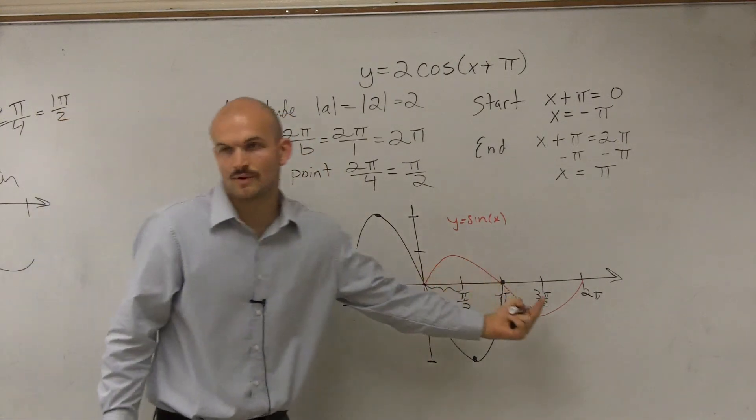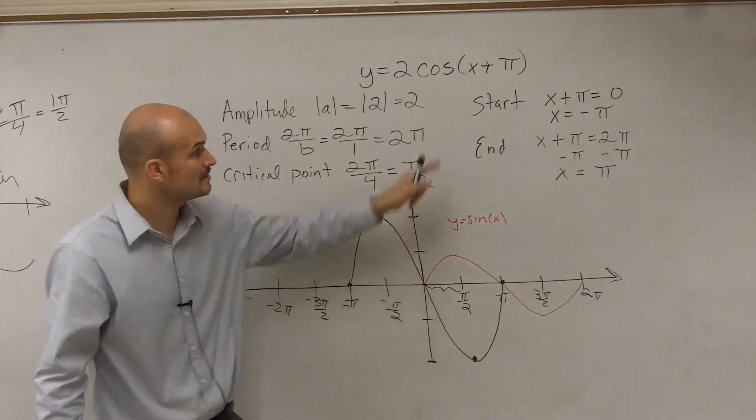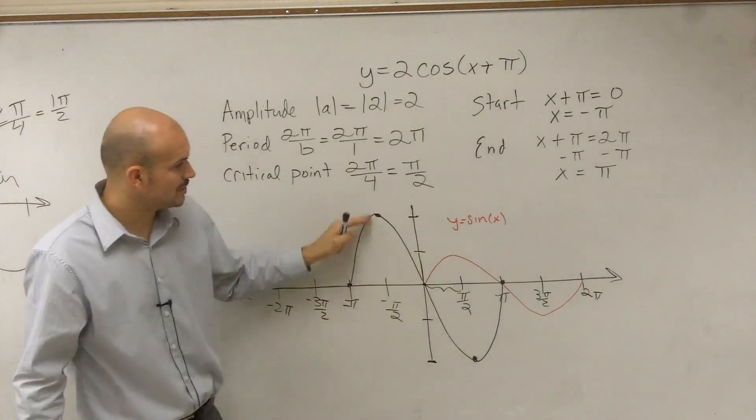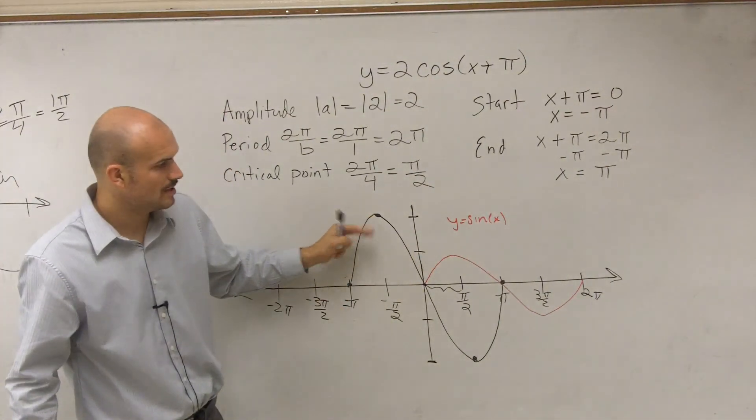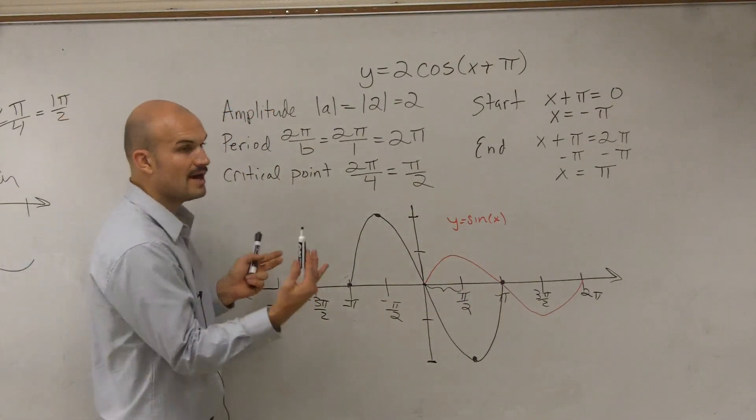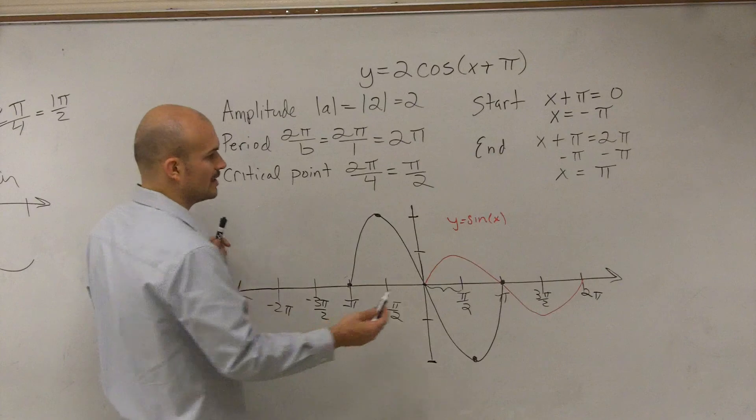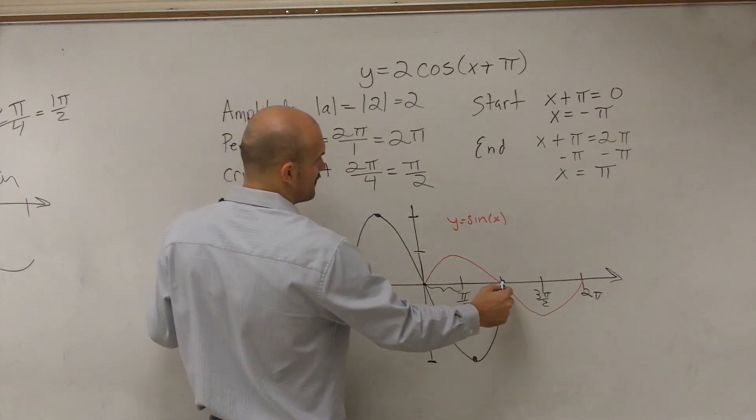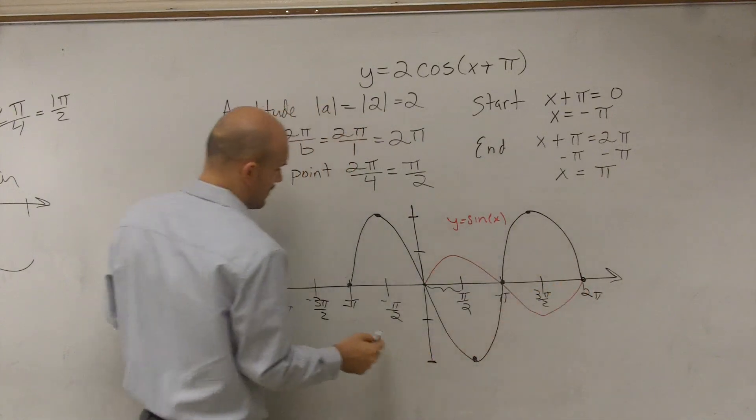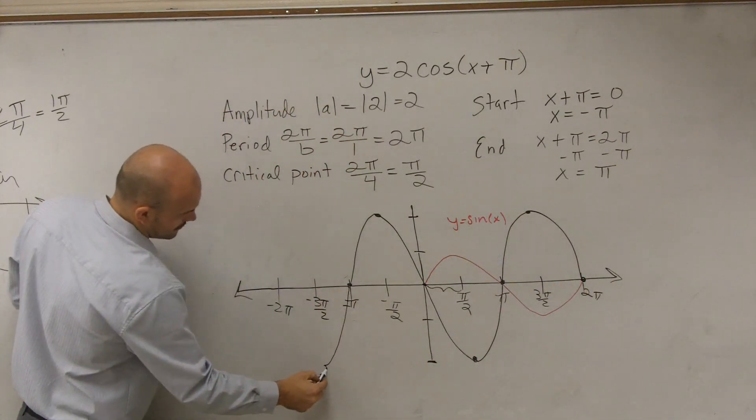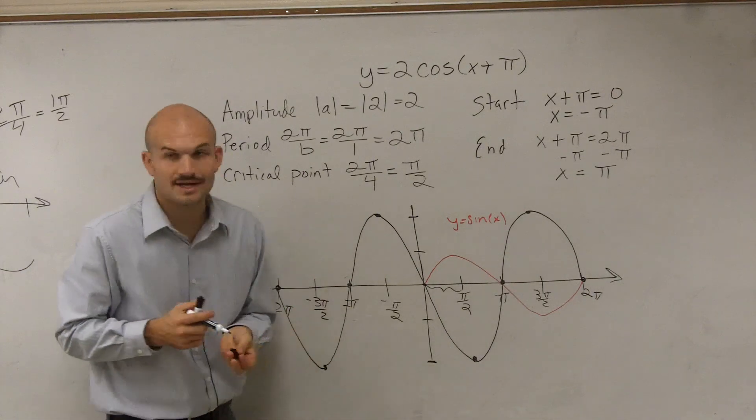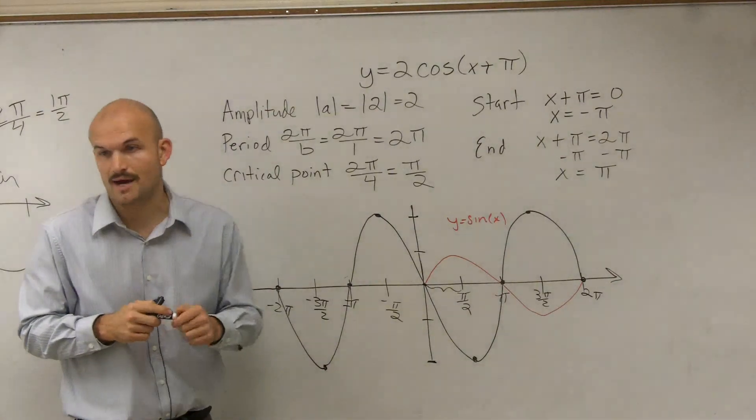So you guys see how this graph has now been transformed. It's been shifted to the left, right? Shifted to the left, π units. It's been increased with its amplitude. But the period, the distance that it takes to complete a cycle is still the same. And then what we always want to do is we're going to work on drawing a graph of 2π. So I can just continue this graph, going in the positive and in the negative direction. So there you go. That's how you graph y equals 2 cosine of x plus π.